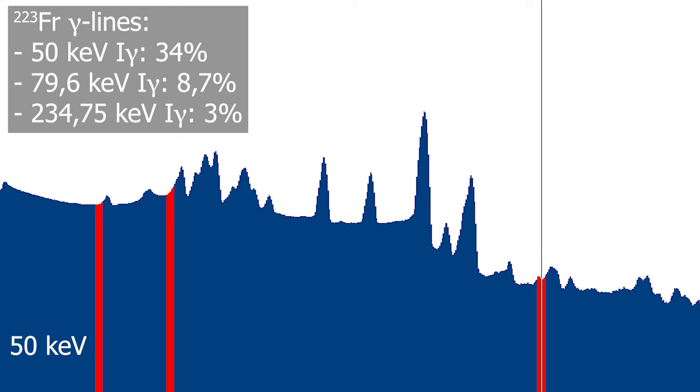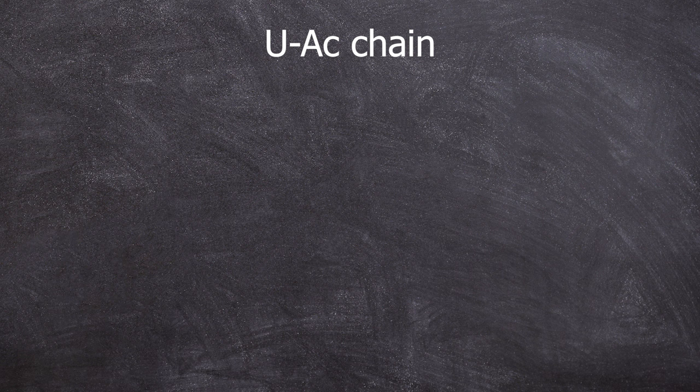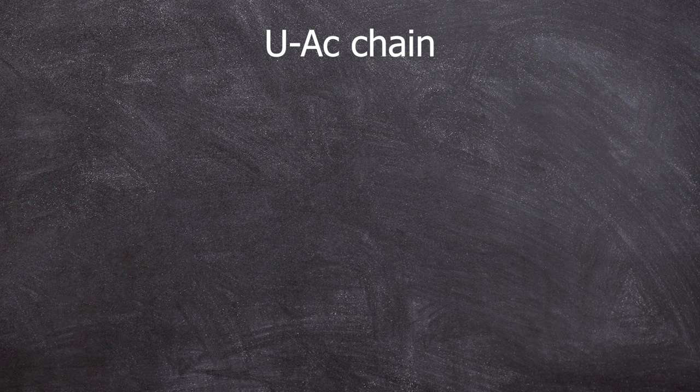Even the 79.6 keV with an occurrence probability of 8.7% is nowhere to be seen. The first proper gamma line, in my opinion, and not in the X-ray range, is at 234.75 keV with a 3% occurrence probability. Yet we still see nothing. I've considered that the GeLi might have a low counting efficiency and even then we should be able to detect these three lines and the heights should correlate with the probabilities, which is not the case.